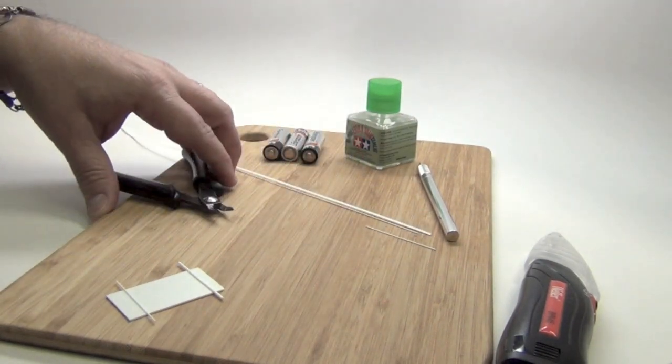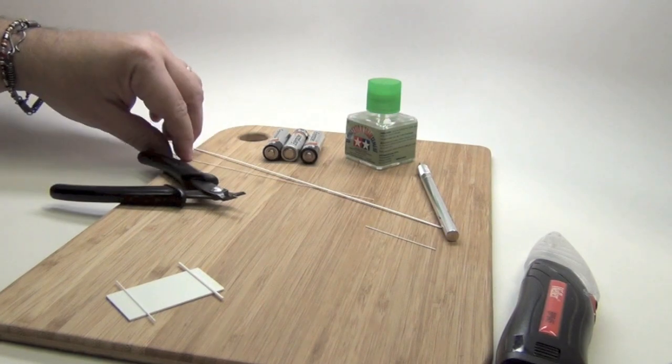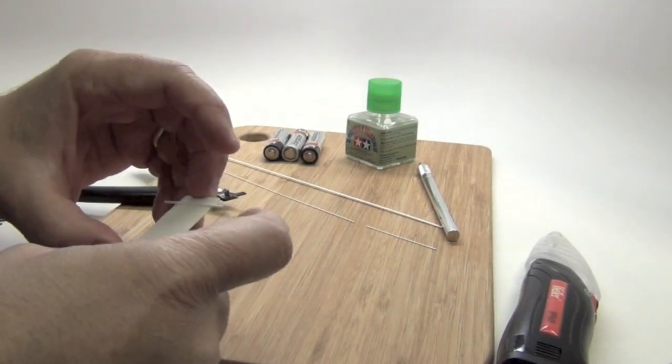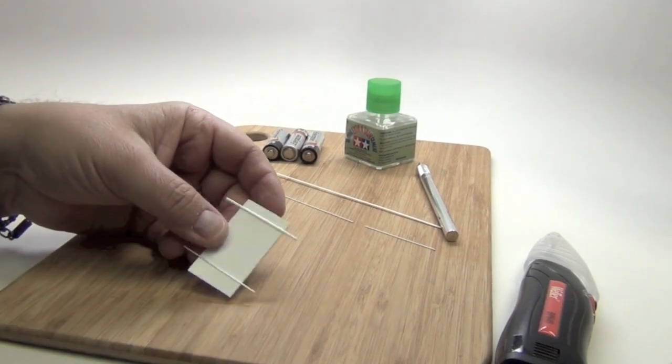You'll need some basically a little bit of sanding paper, 320 grit will do it, that way you can basically smooth them out. And that's it.